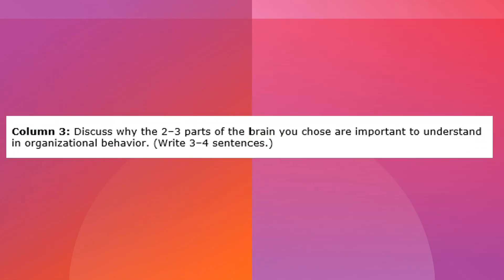Now we're on to the third and final column. In this column you're going to be looking at practical applications in organizational behavior — this is partly the 'why do I need to know this for my future career in organizational behavior?' You're going to write three to four sentences about why each of the parts of the brain you identified in column one are important to understand in organizational behavior. Why are we studying them? Why do we need to know them? Why are they going to be important within our organization?